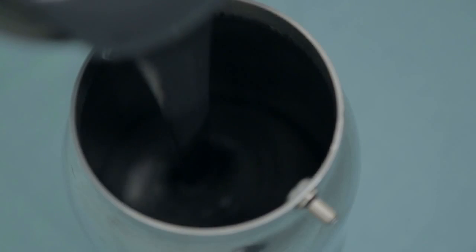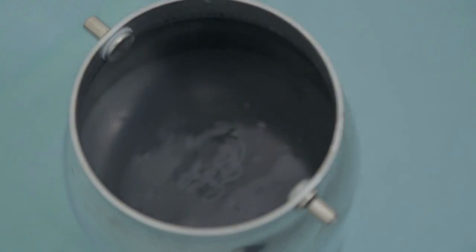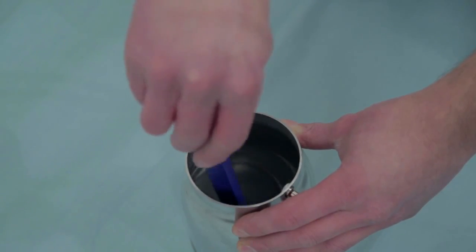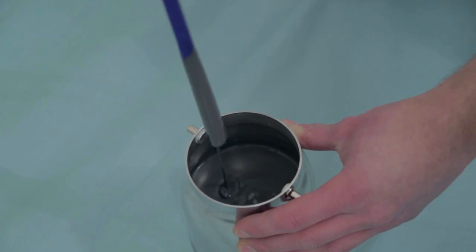Pour the paint or other coating into the paint cup, taking care not to overfill. It is important to get the viscosity of the coating correct in order for the spray gun to operate effectively.